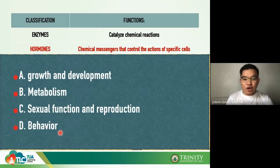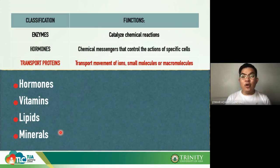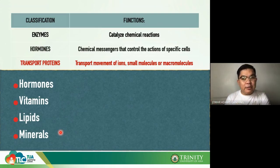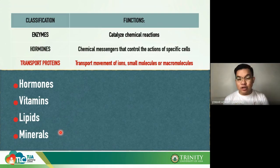Proteins can also be classified as transport proteins. The solubility of proteins enables them to move freely around the plasma. Because of that solubility, proteins are perfect examples of transporters of many ions, small molecules, or even macromolecules such as lipids.